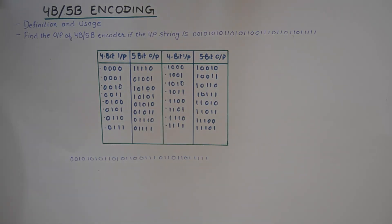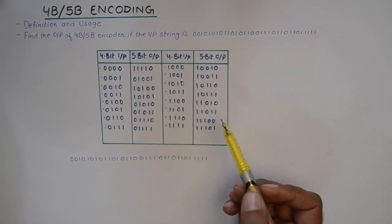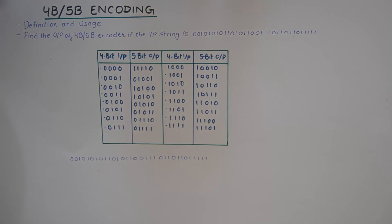And of course, the timing extraction becomes easier and error detection also becomes easier because the 5-bit output code has 32 possible outcomes, and out of those 32 possible outcomes, only 16 are being used.